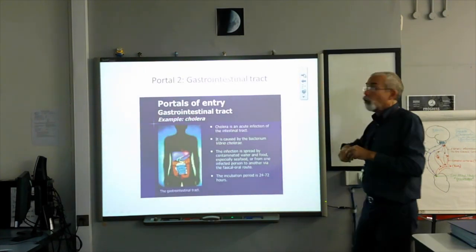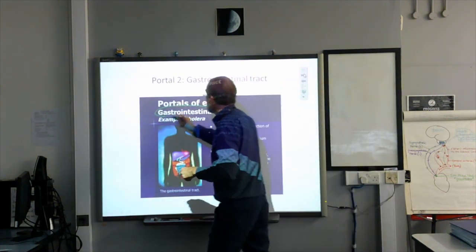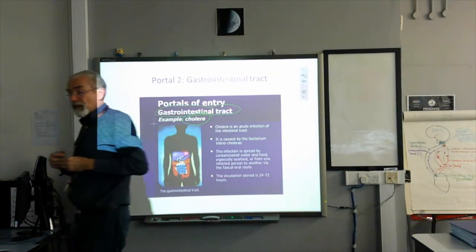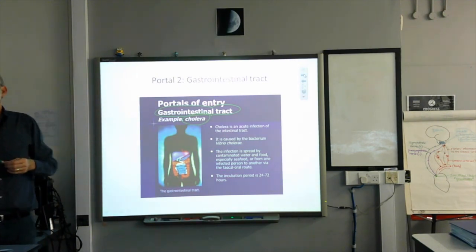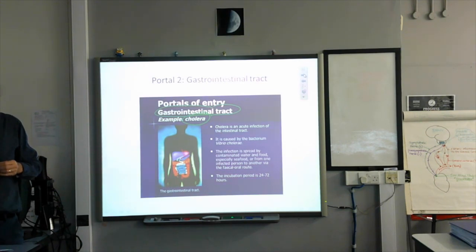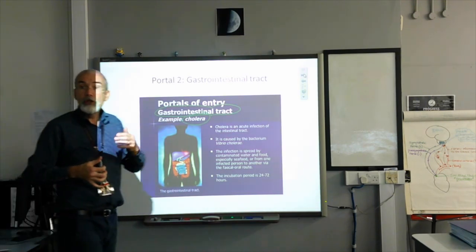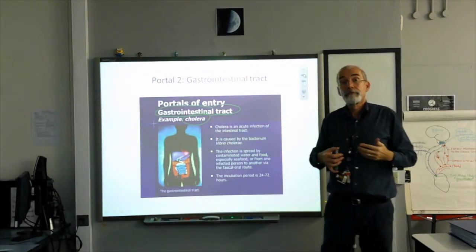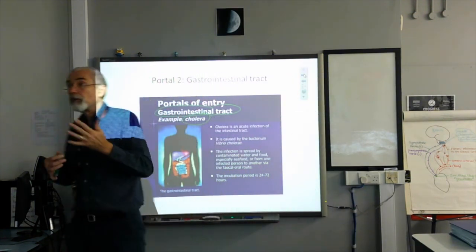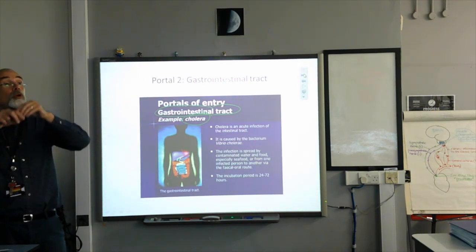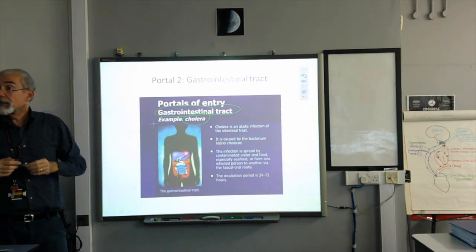Portal number two: your gastrointestinal tract. A great example of a bacteria that utilises this is cholera. Cholera is a killer disease — it can kill people, particularly children and elderly people, very, very quickly. Does anybody know why people die from cholera? What is it that actually causes death? It's actually dehydration.